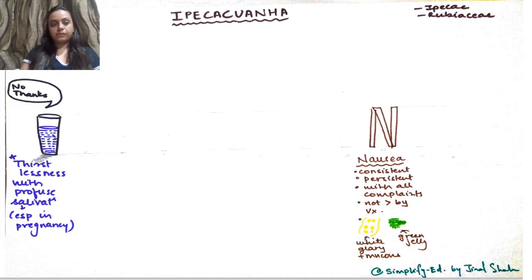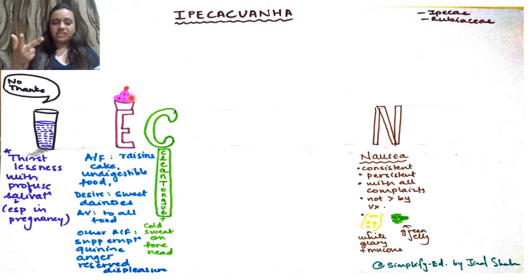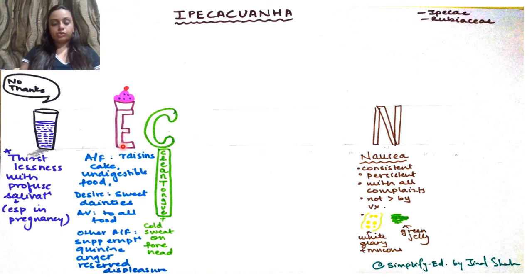The E and C together represent ailments from — ailments from raisins, cakes, undigestible food, and dainties. There is a desire for sweetened dainties and aversion to all food in general. Other ailments from include suppressed eruptions, quinine, anger, and reserved displeasure.